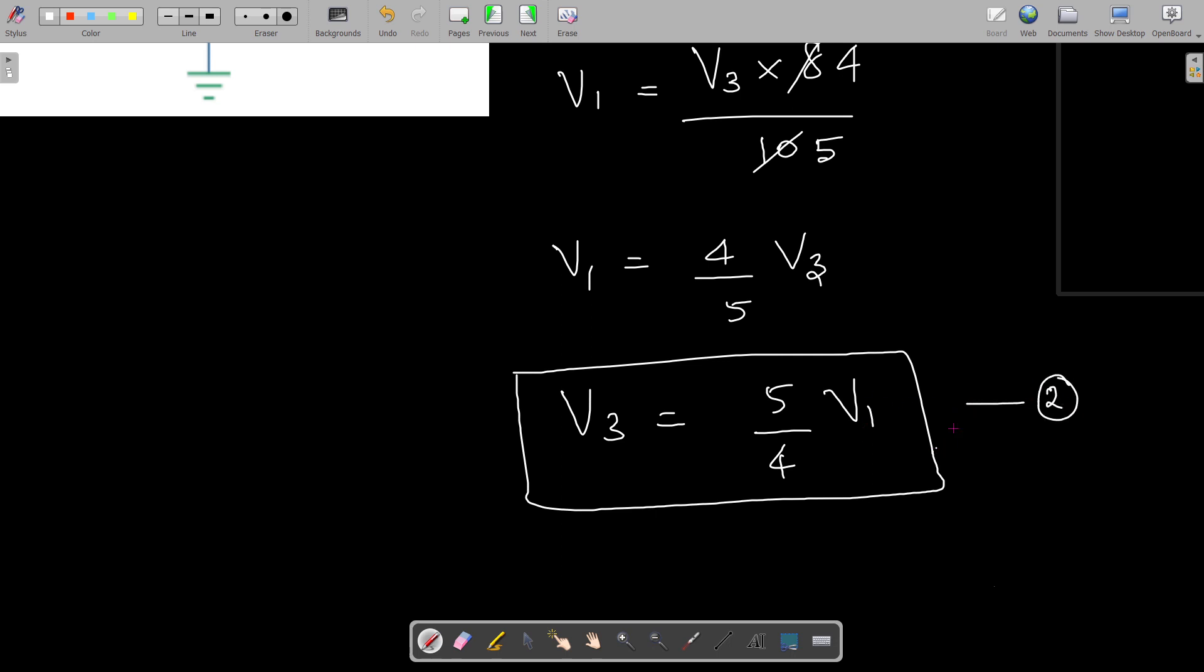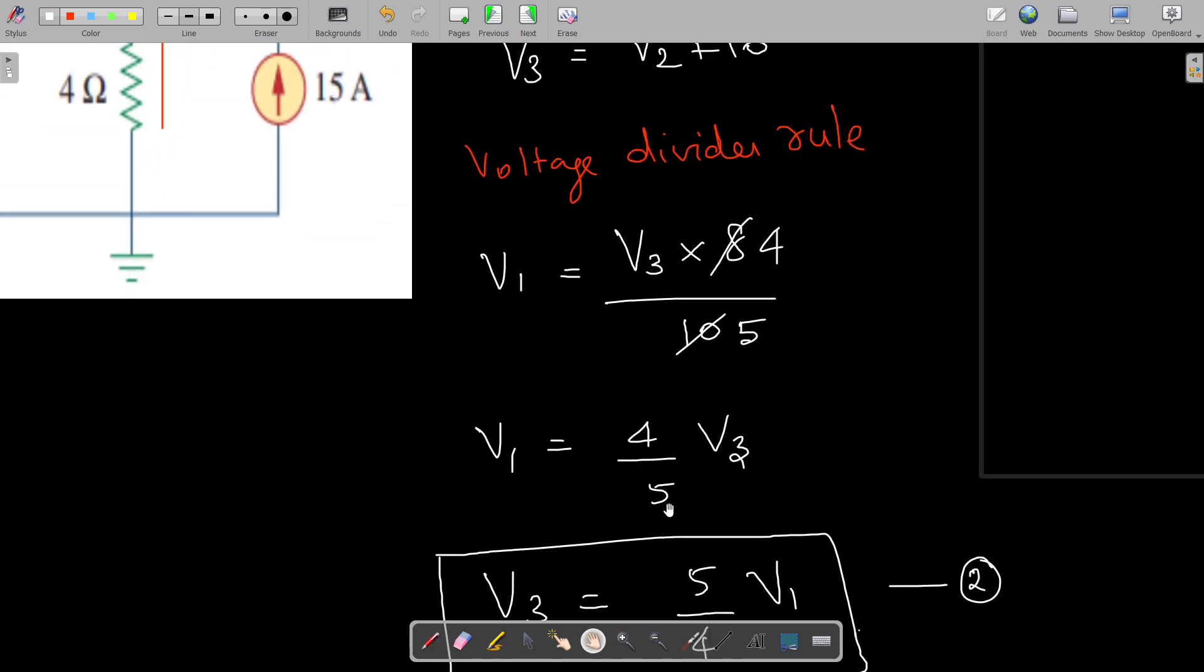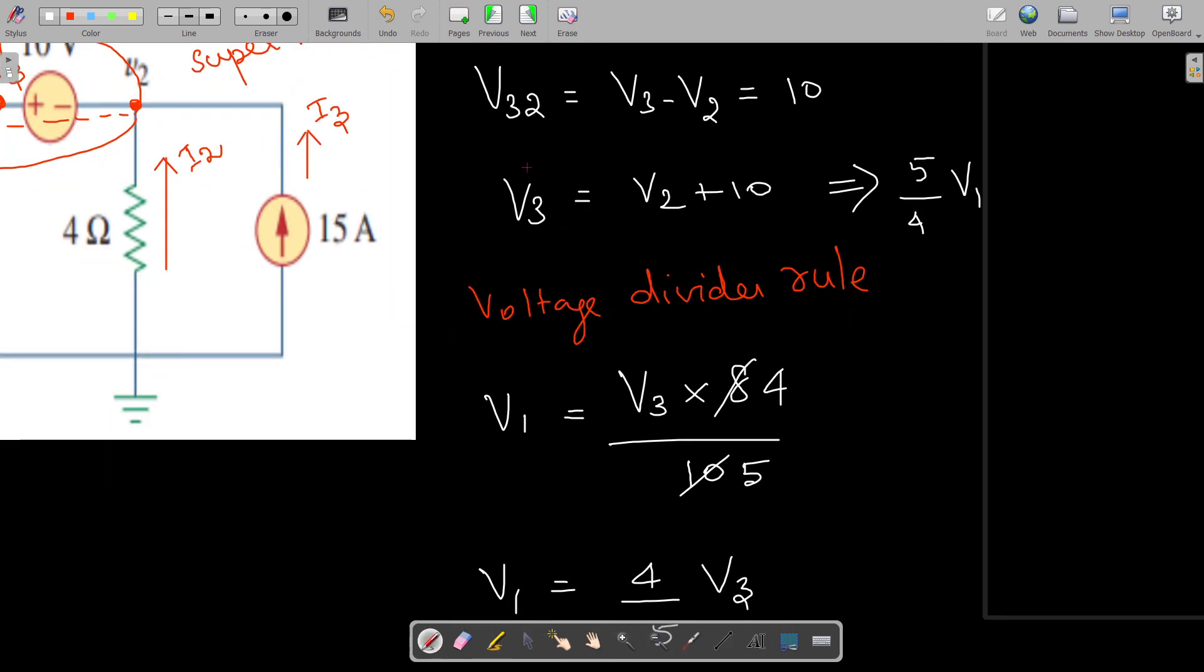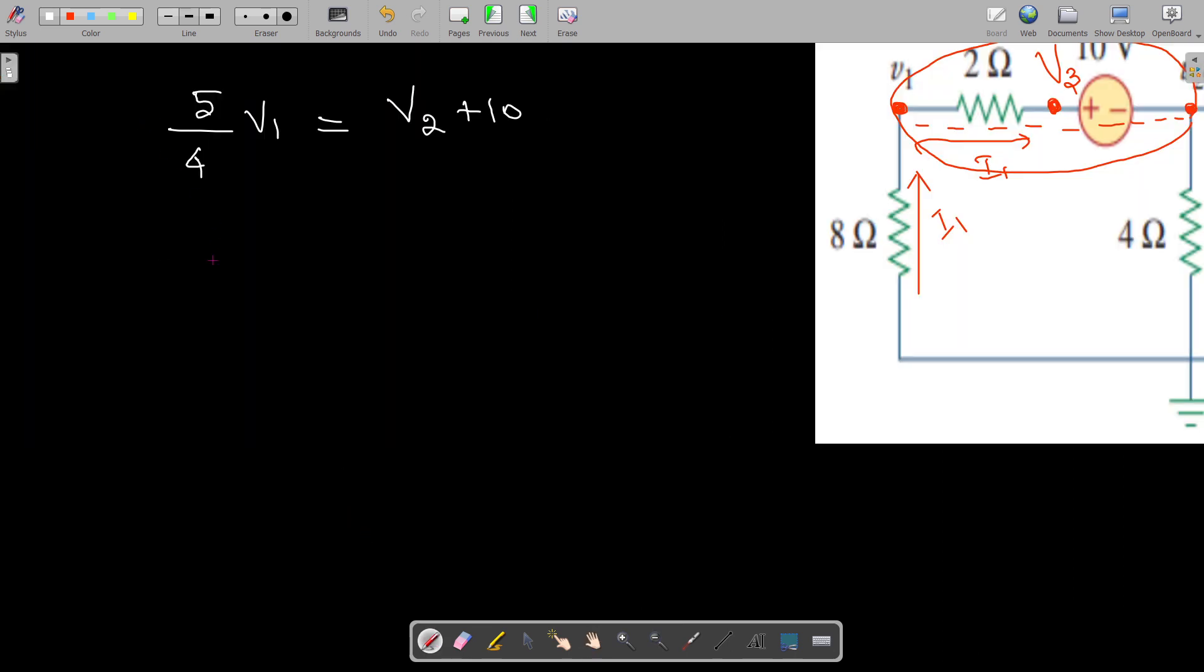This should be substituted here. Instead of v3, that equals v2 + 10. Cross multiplying this, we get 5v1 = 4v2 + 40, so 5v1 - 4v2 = 40. I get one equation which relates v1 and v2. Let me take this as the third equation.